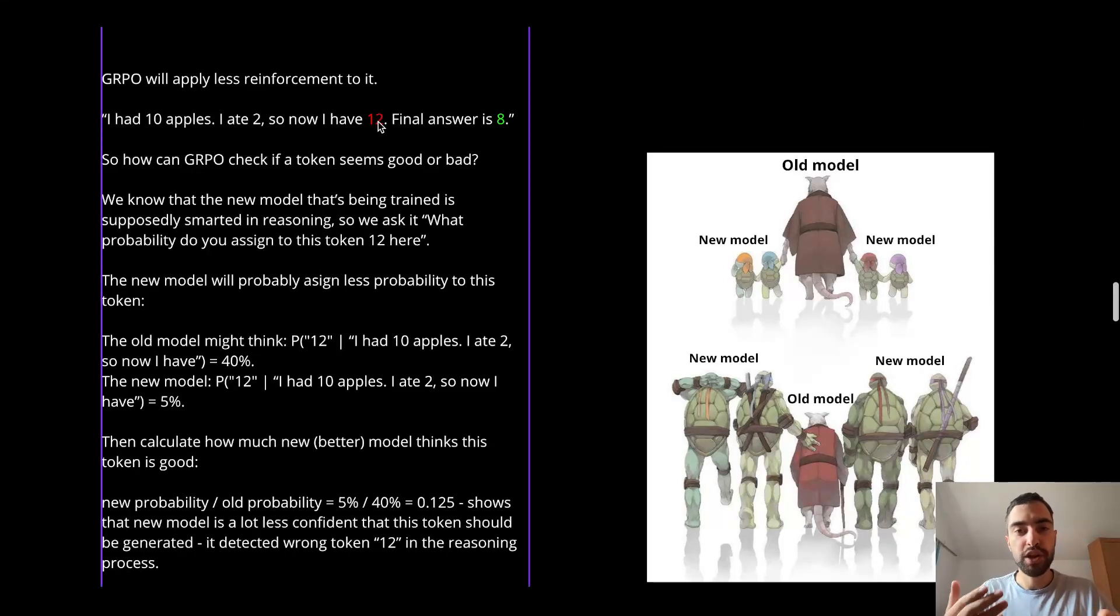So this new model that's now smarter, it's gonna find this token 12 less likely to be here. So for example, the old model thought that given this sequence of tokens, I had 10 apples, blah, blah, blah, this token 12 has 40% chance to be generated next. But the new smarter model now only gives, for example, 5% chance because this 12 is not correct here. So the smarter model thinks it's less likely to be there.